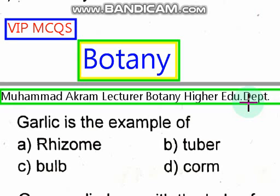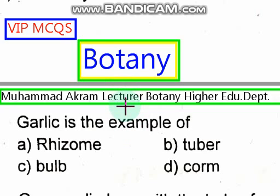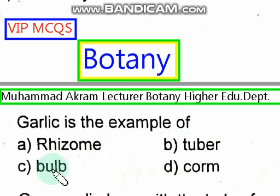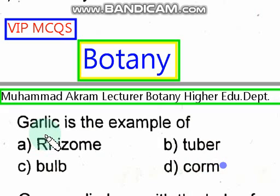Assalamu alaikum. Welcome to another important video based on MCQs of Botany. Our first MCQ is: garlic is the example of rhizome, tuber, bulb, or corm? The right option is corm — corm is the correct answer for this MCQ.